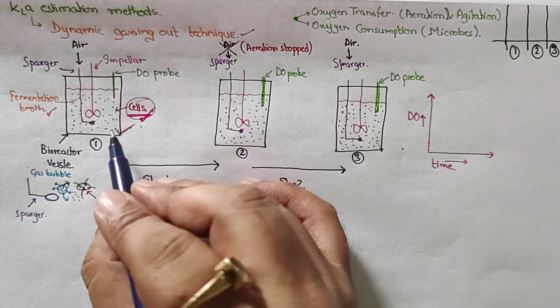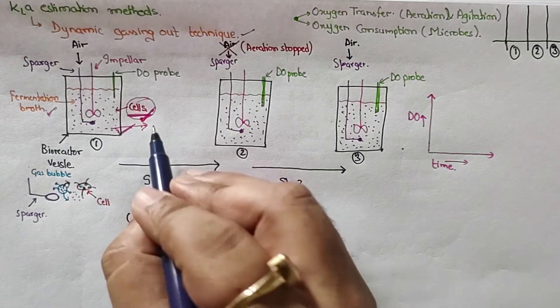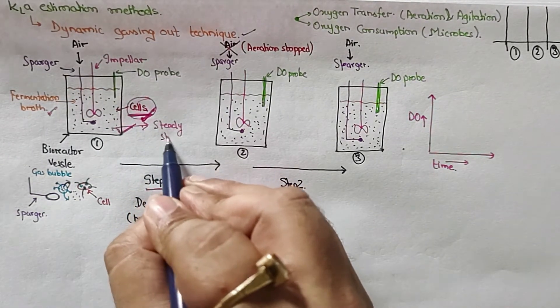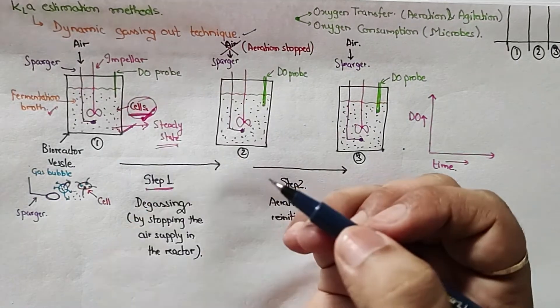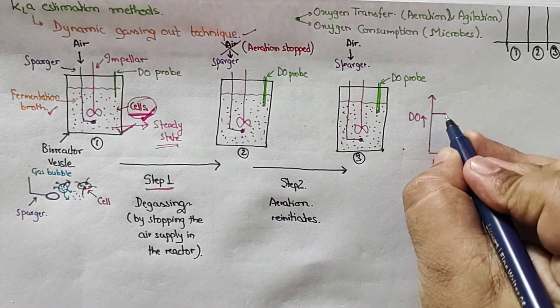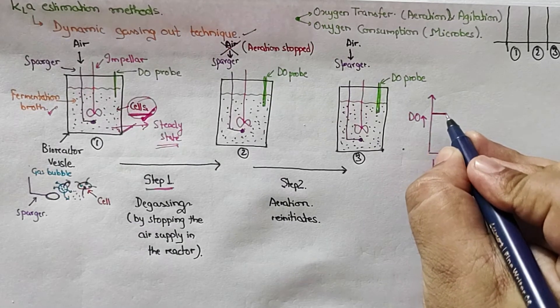At this level we presume that there is a steady state that exists. Before entering point one there is a steady state, the DO level remains constant.